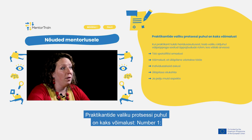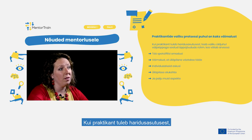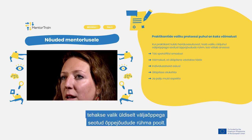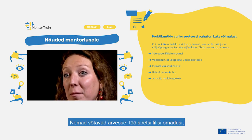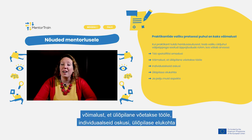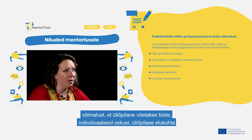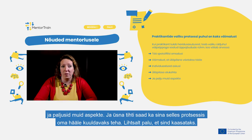There are two options of the selection process of the apprentices. Number one, if the apprentice comes from an education center, the selection is made generally by the group of professors involved in the training. They take into account the specific characteristics of the job, the possibility for the student being hired, individual skills, student's place of residence, and many other aspects. And quite often you can also voice your opinion in the process — just ask to be involved.